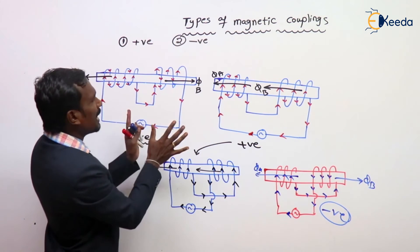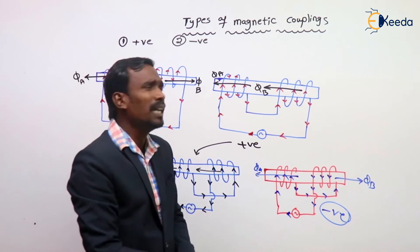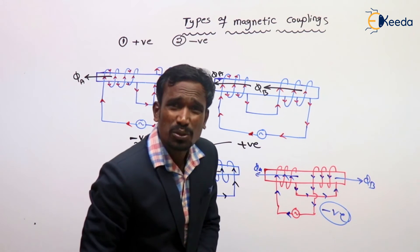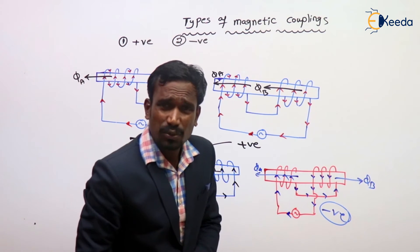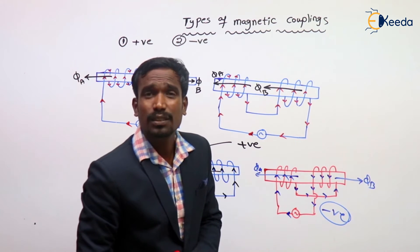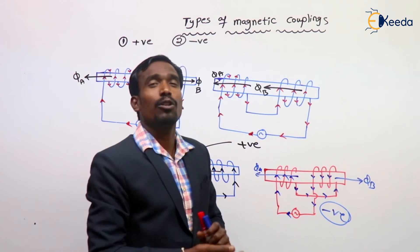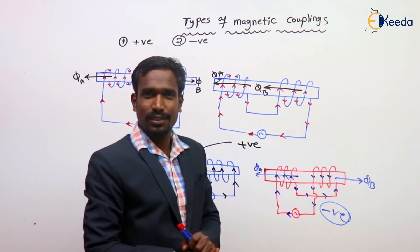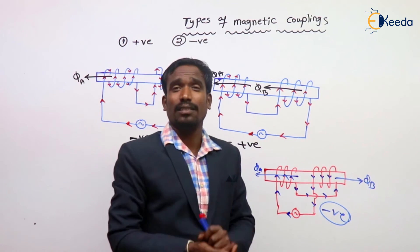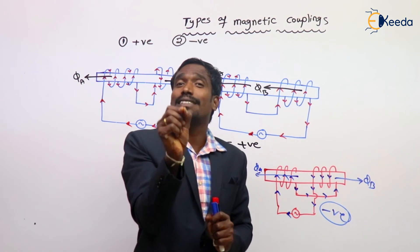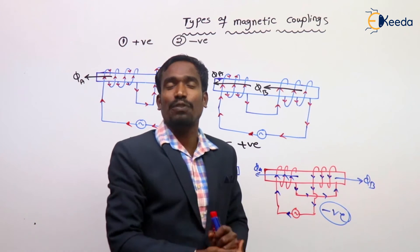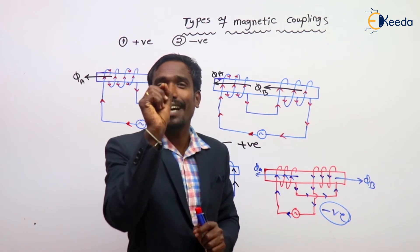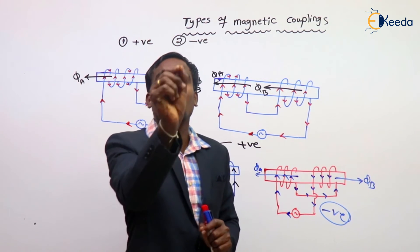Actually, we have to decide which is positive and which is negative magnetic coupling based on flux. But is it easy to decide which is adding and which is opposing? It is very difficult. That's why we are following dot notations. The dots are based on sense of winding, not the direction of current.